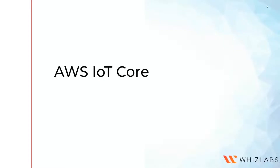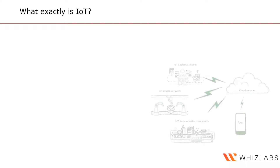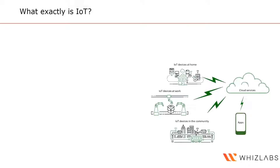Hello everyone and welcome to this lecture on AWS IoT Core. To begin with, let's understand what exactly is IoT and what are all these different devices that IoT communicates with. We've got IoT devices at home, at a factory, within the community. What are all of these devices doing and what exactly is IoT?